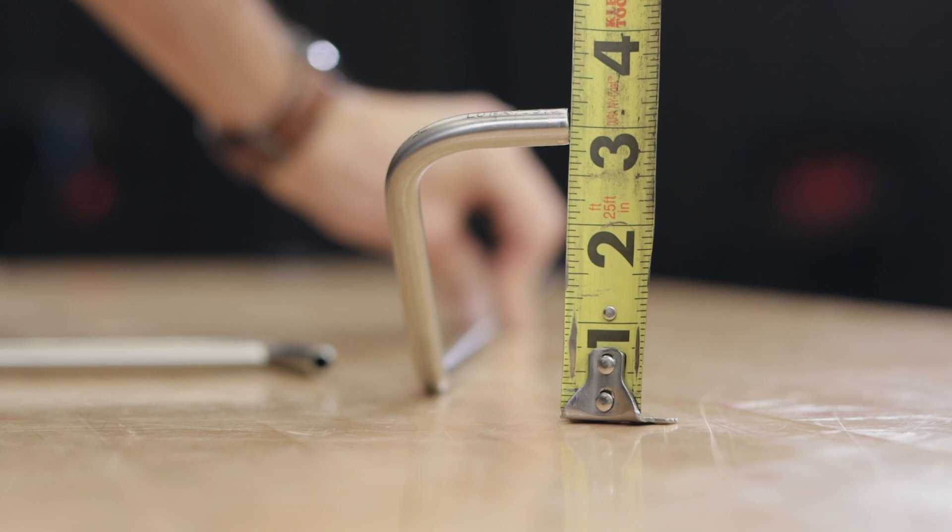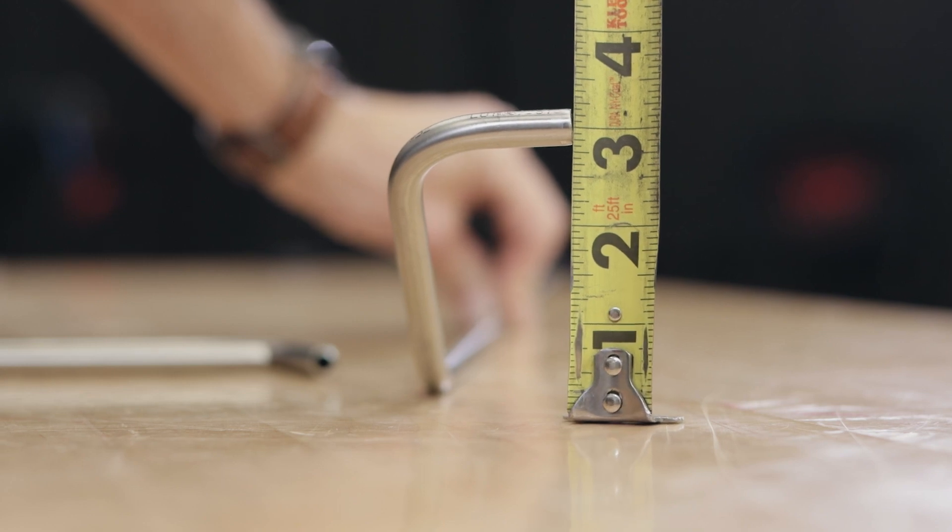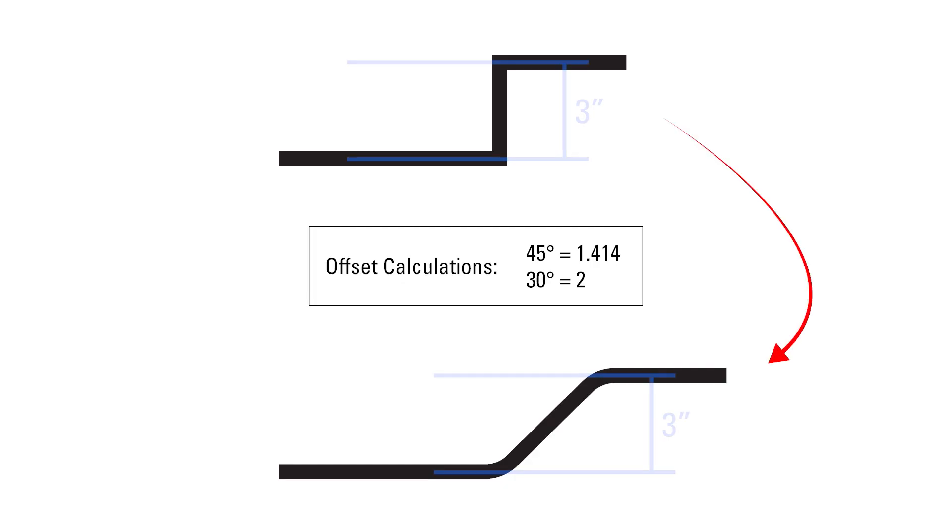Bend it close, get a measurement, and adjust from there. The reason we're doing it this way instead of mathematically is because it's just not necessary for the type of connections that we need to make here. If you want to calculate the exact distance for an offset with two 45 degree bends, multiply the offset height by 1.414. That will be the length of tubing needed between the two center lines of both 45 degree bends.